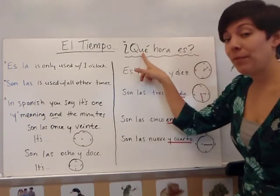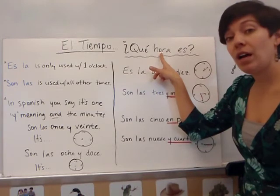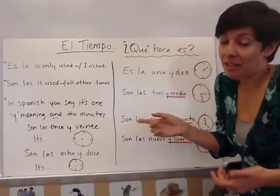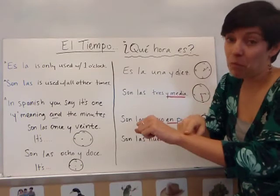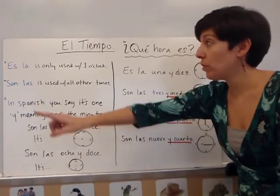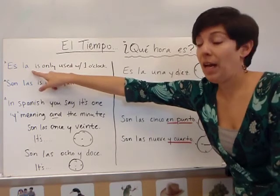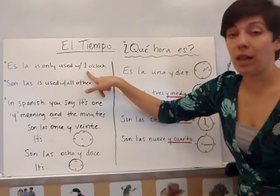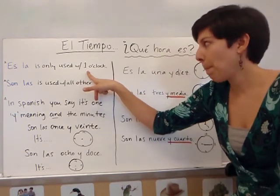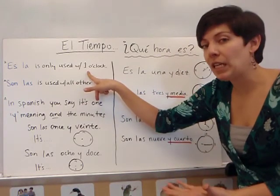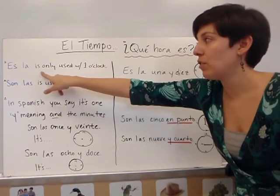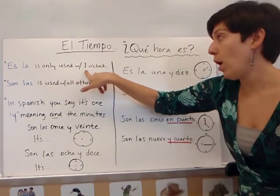Repeat it: ¿Qué hora es? ¿Y qué hora es? Es... What time is it? There are two possible ways to start your answers. The first one is 'es la.' Es la is only used with one o'clock, because it's singular, and one is the only singular number. It can be 1:15, it can be 1:27, but it still has to start with 'es la' any time it's one.